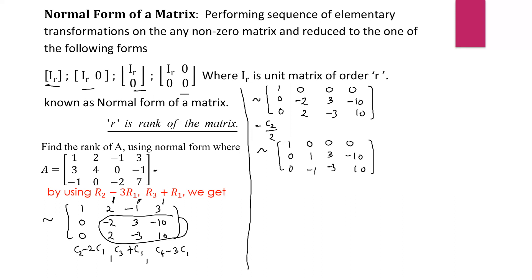Taking help of this 1, we convert the minus 1 below it into 0. The operation is on row 3. We take help of the second row only — not the first row, to avoid affecting previous entries. So we compute R3 plus R2. The equivalent matrix: 1, 0, 0, 0; then 0, 1, 3, minus 10; then 0 plus 0 gives 0; minus 1 plus 1 gives 0; minus 3 plus 3 gives 0; and 10 minus 10 gives 0.